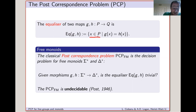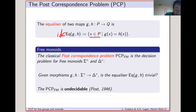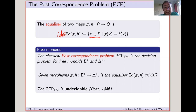As G and H are morphisms, they'll take the identity element of P to the identity element of Q. In particular, they agree on the identity element, so the identity element is contained in the equalizer. We can then ask: does the equalizer contain any other elements? And this is Post's correspondence problem.